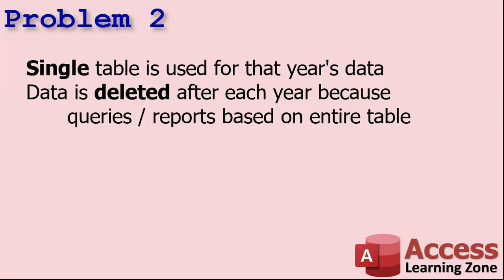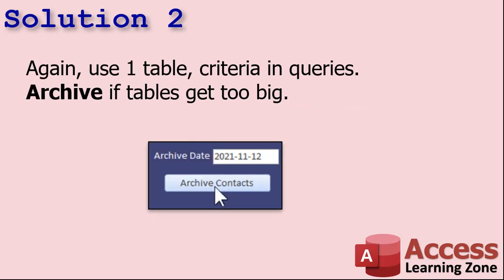Problem two is very similar to problem one, but instead of having different year-named tables, they copy the whole database. They set aside the 2022 copy once the year is done, and the whole table has all the data for that year in it. All of the queries and reports are based on that entire table, so when they try to add records for 2023, the queries and reports are all wrong because they show more than just one year of data. Again, you solve this the same way as problem one — use one table with criteria in your queries.